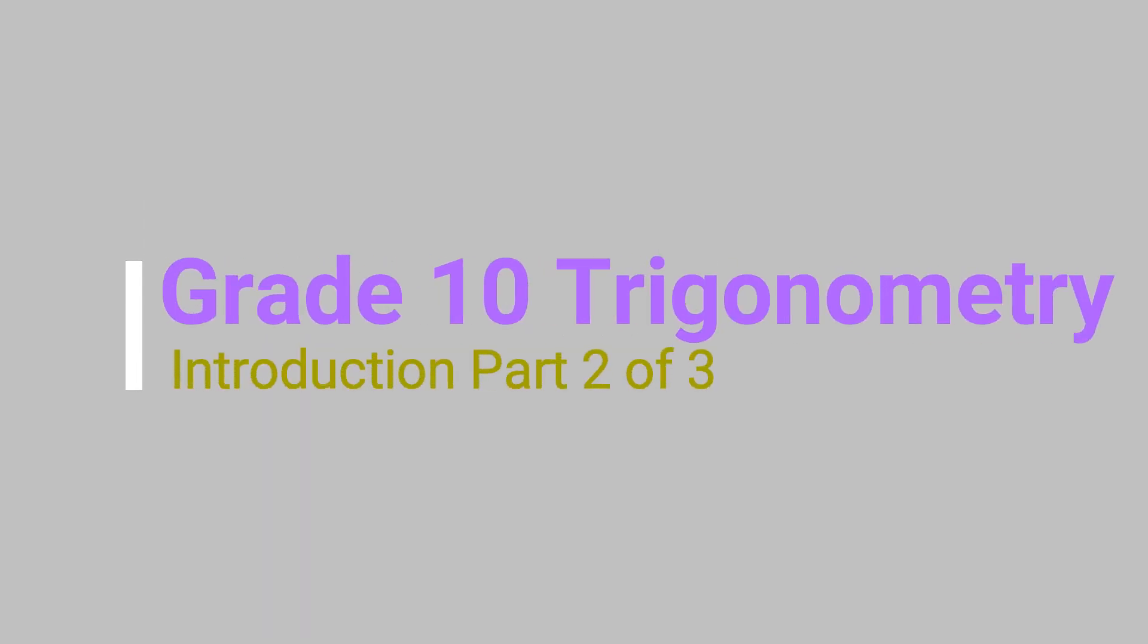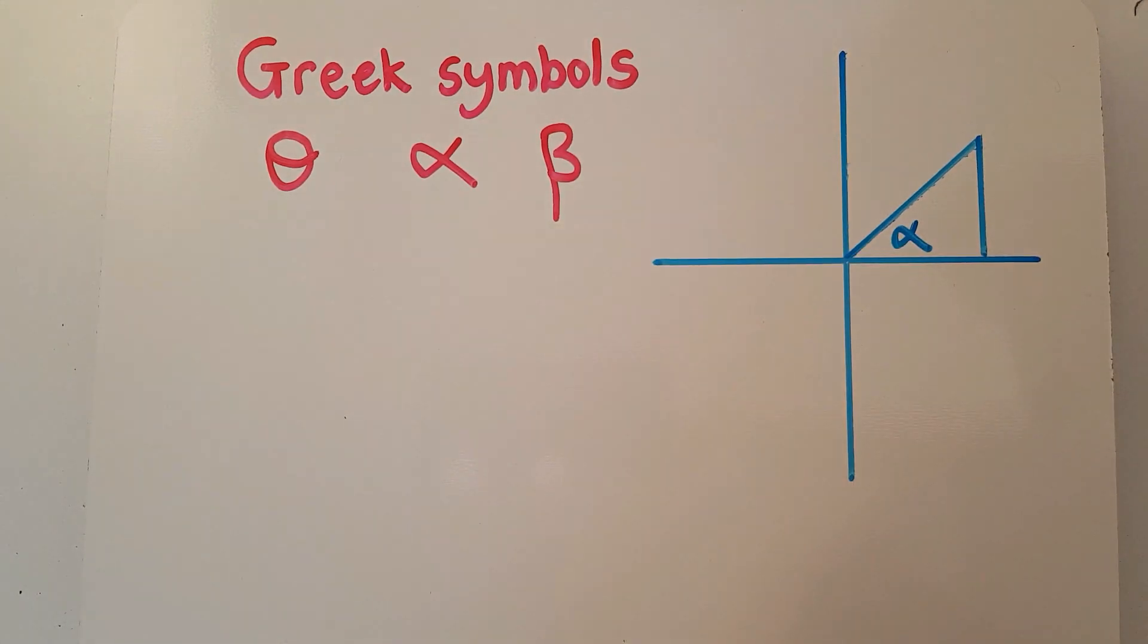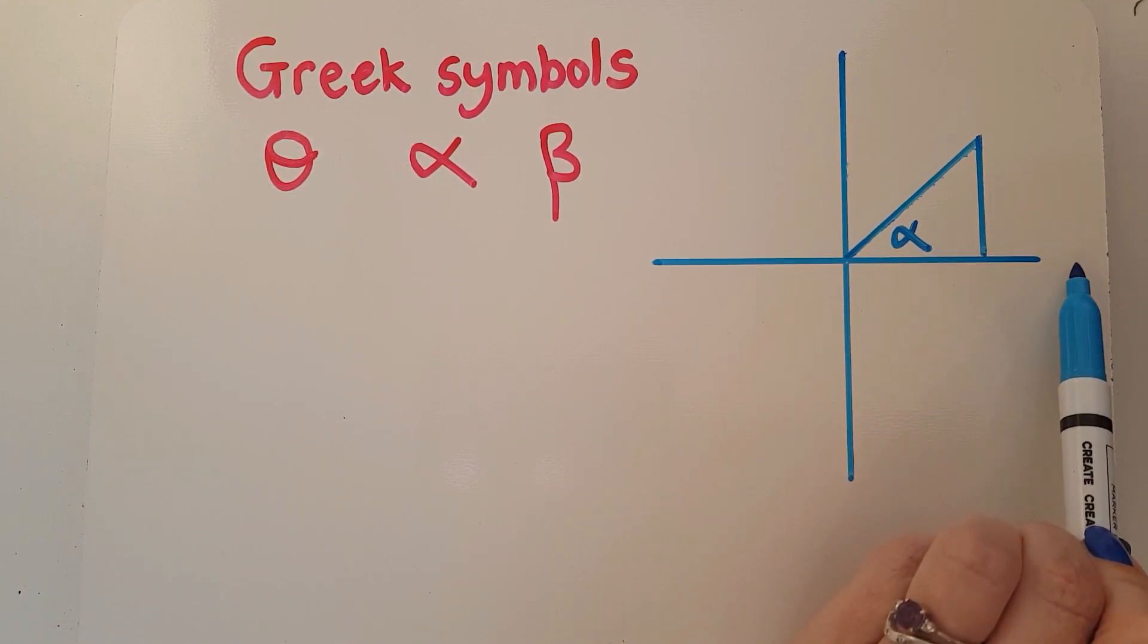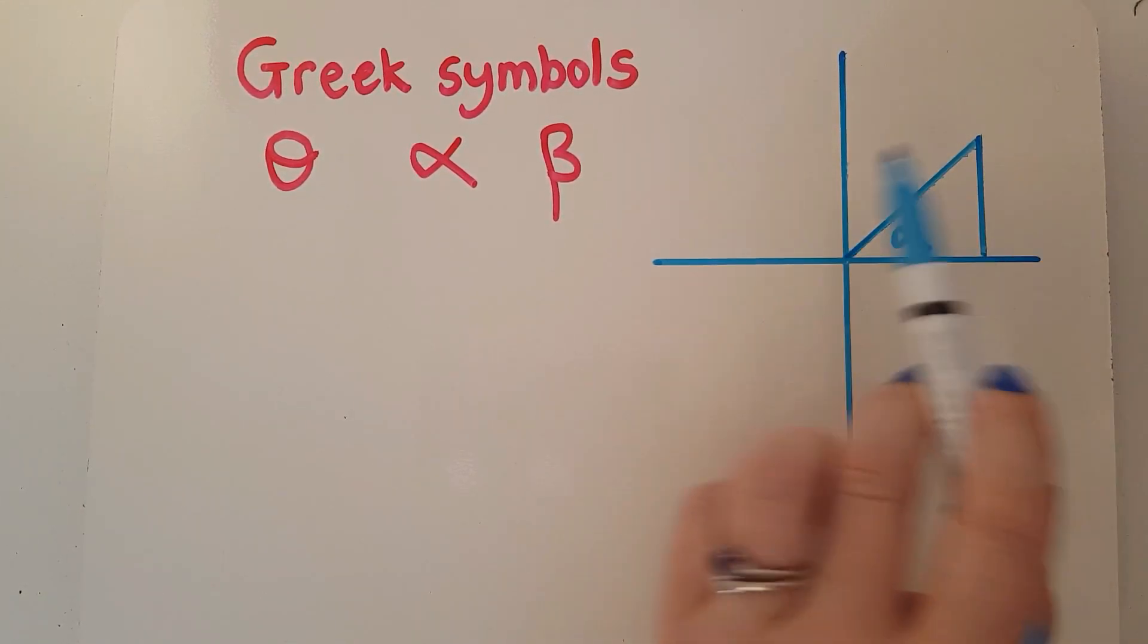When we deal with these triangles with angles in them, let's make this one alpha. We put them on the Cartesian plane, and we're clearly dealing with an acute angle because if that's 0 and that's 90, then this must be something in between.